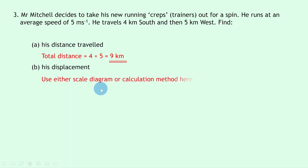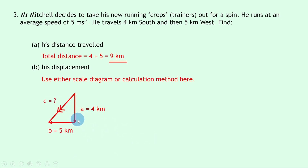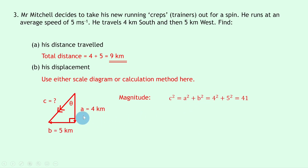To find the displacement we'll use the calculation method. Starting with a sketch: we've got a vector going south 4 kilometers — label that side a — and a second vector going west, side b, which is 5 kilometers. We draw the resultant vector from start to finish, give it a double arrow, and label it side c, with our right angle and angle theta next to the starting point. Using Pythagoras, c squared equals a squared plus b squared: 4 squared plus 5 squared equals 41, so side c equals the square root of 41, which equals 6.4 kilometers.